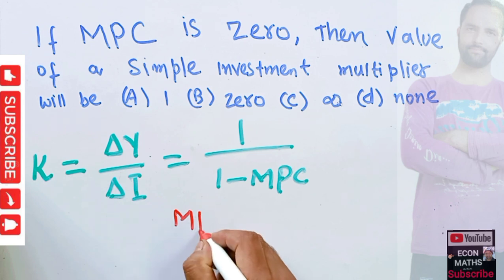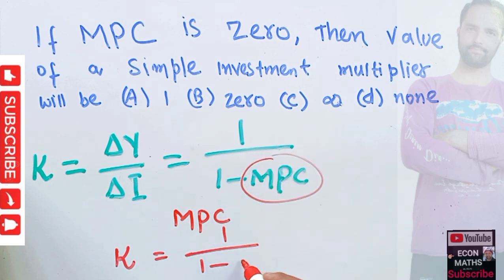If MPC is equal to 0, then our multiplier will be equal to 1 upon 1 minus 0, which gives us 1. So the value of multiplier will be equal to 1.